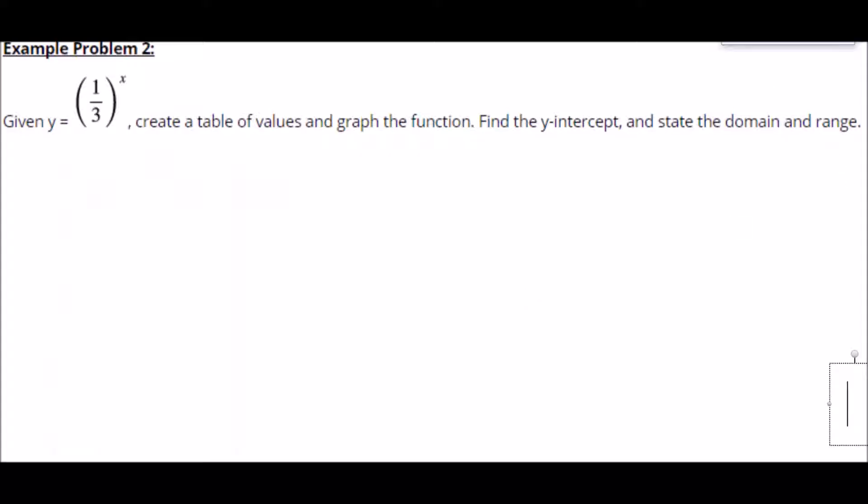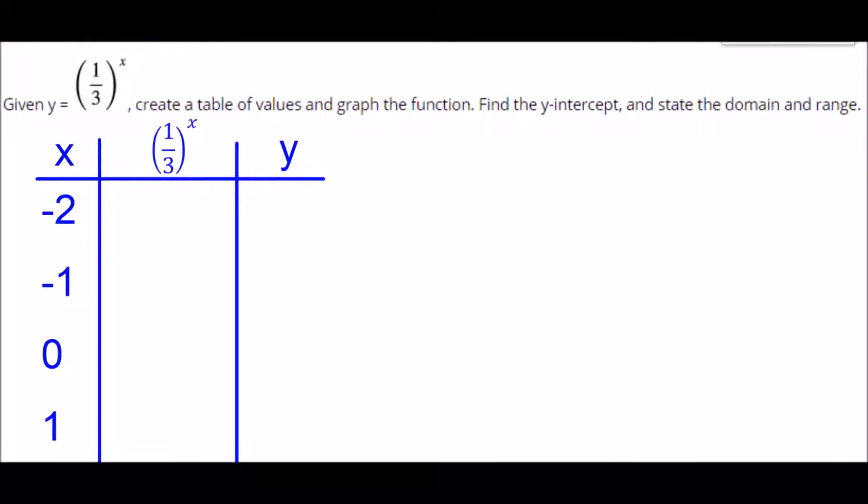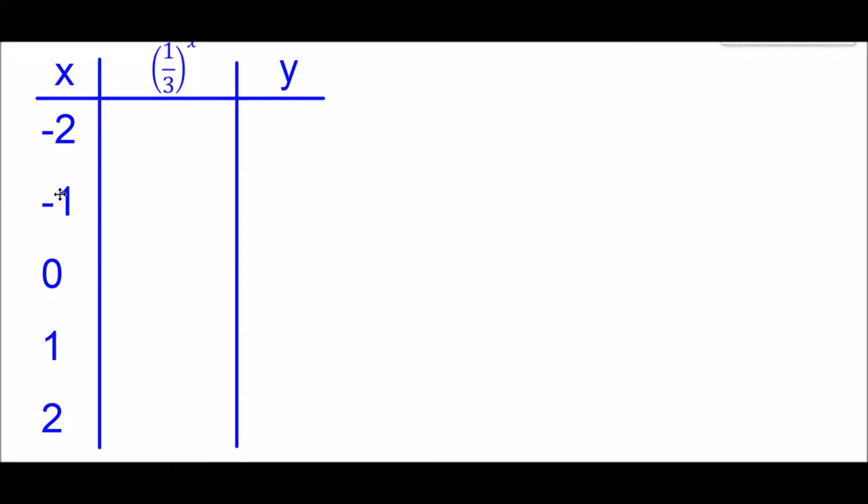For this function, we start by creating a table similar to example problem number 1, where we have x values of negative 2, negative 1, 0, 1, and 2. This middle column shows us evaluating this function to the x power, and the y value we get after evaluating one-third to the x.